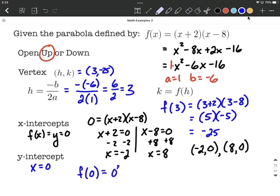So that's going to be 0 squared minus 6 times 0 minus 16. So 0 minus 0 minus 16 is going to work out to be negative 16.